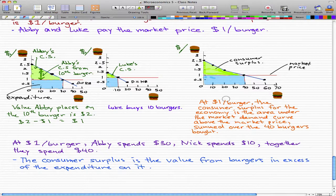So at a dollar per burger, the consumer surplus for the economy is the area under the market demand curve, which is our blue curve, and above the market price, which is our red curve, summed over the 40 burgers, which we have labeled here.